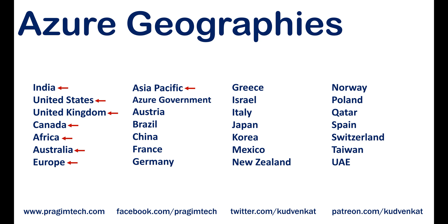We also have a geography called Azure Government. This geography is only available to the United States federal, state, local, and tribal governments and their partners — it's not available for general public use. Azure Government offers the broadest level of certifications, so even the most critical government compliance requirements are met. All of its operations are controlled by screened and cleared US citizens.